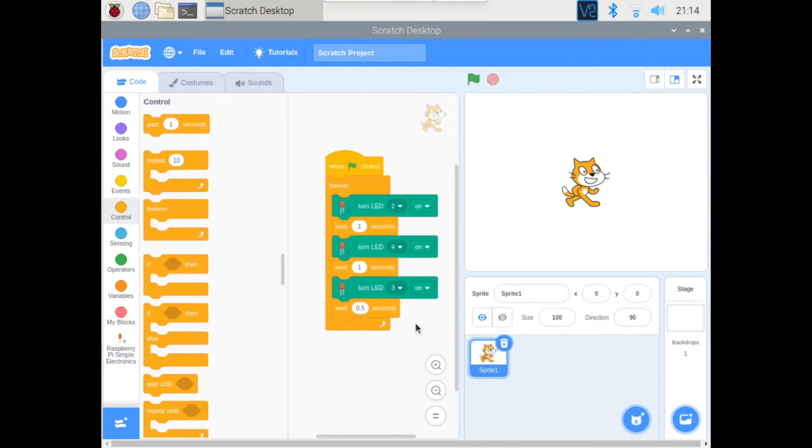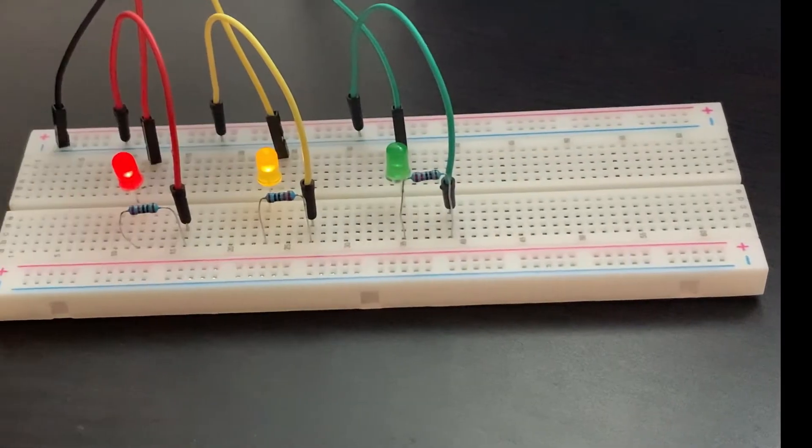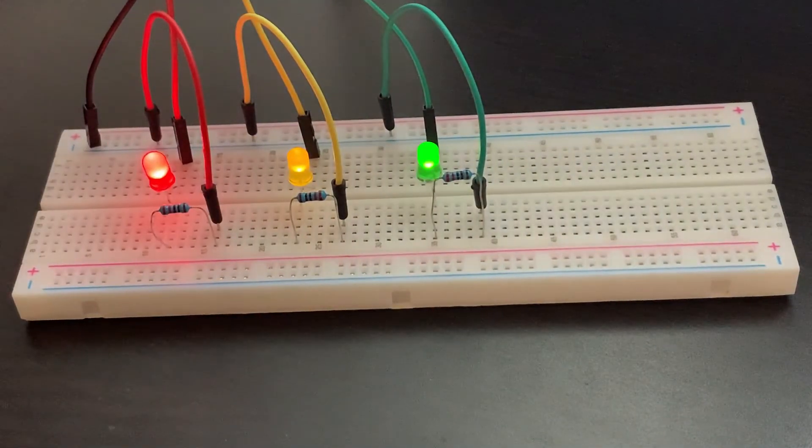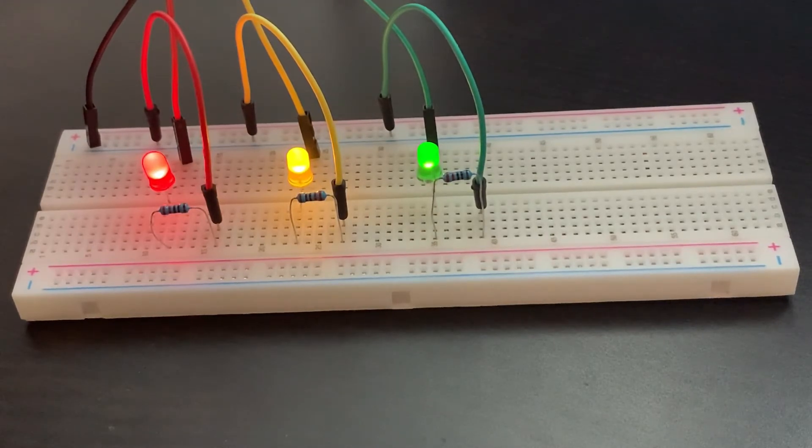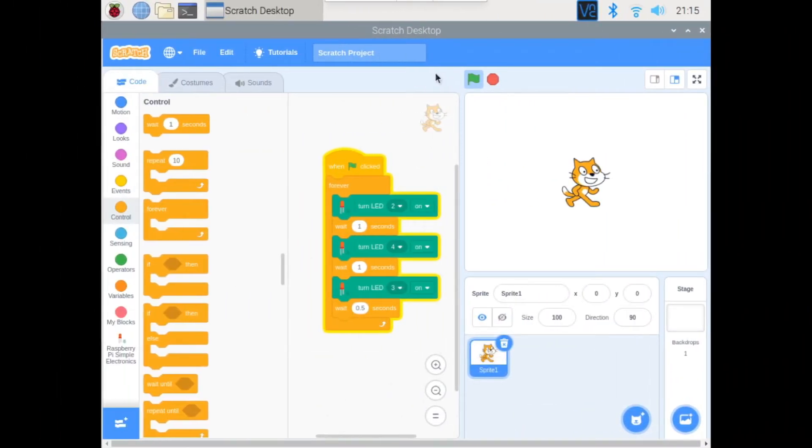So now when we click the green flag... As you can see it works, but it does not turn off right after it's on, so after one loop you can't see the difference. Let's click the red sign to stop our program.